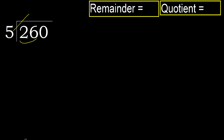But not greater. 5 multiplied by 6 is 30 — 30 is greater. 5 multiplied by 5 is 25 — 25 is not greater.